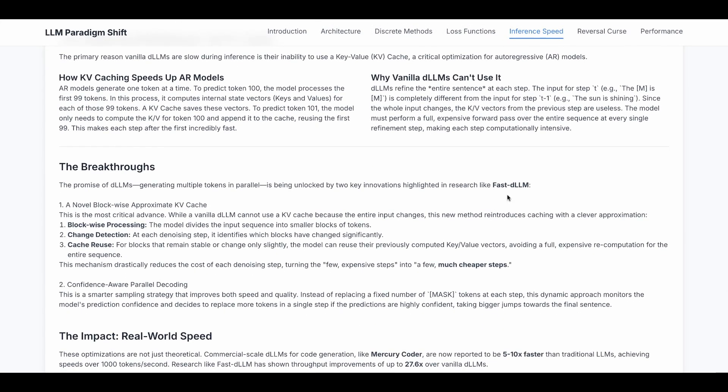Now let's talk about the breakthroughs. Those are included in research like Fast DLM. The first one is novel block-wise approximate KV cache. Although we can't use the exact KV cache like autoregressive, this new method reintroduces caching with a clever approximation. The model divides the input sequence into smaller blocks of tokens.